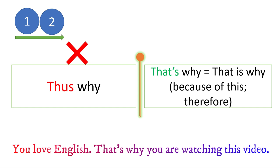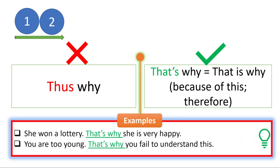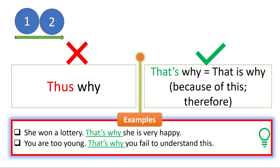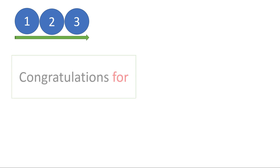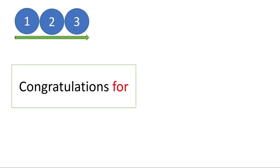Now look at these examples. 'She won a lottery — that's why she is very happy.' 'You are too young — that's why you fail to understand this.'